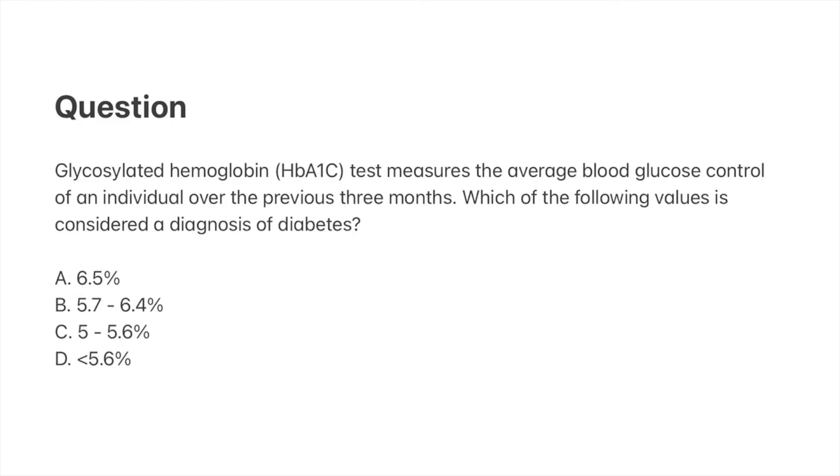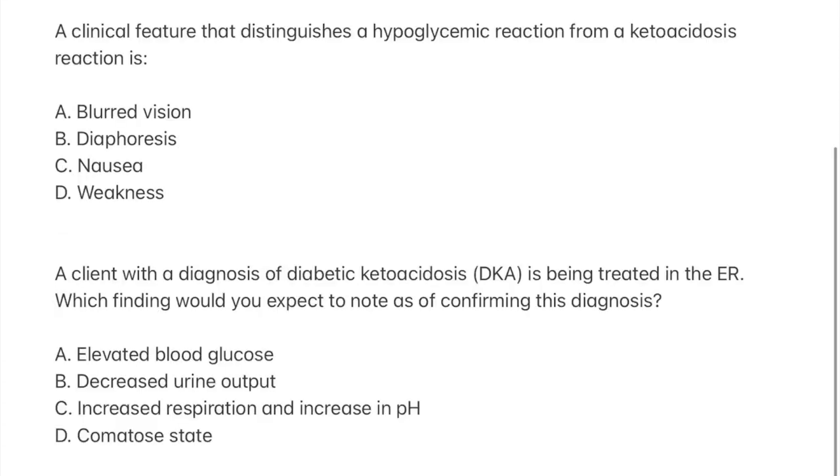The right answer would be A, which is 6.5%. In diabetics, the percentage would be 6.5% or above, which if you would like the values in millimole per mole, it would be around 48 or more.